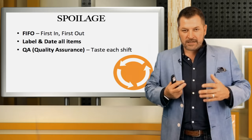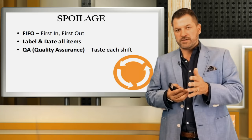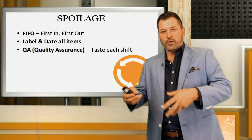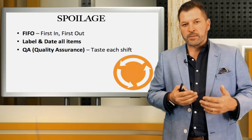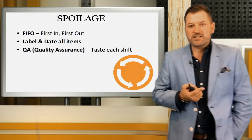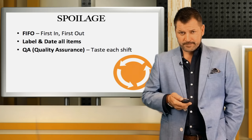Next: spoilage. Spoilage is simpler but worth reminding everyone that product should be rotated. The concept is called FIFO — first in, first out. Everything should be labeled and dated, and when new prep or new product goes into the cooler or storage area, it's put behind the oldest product so the oldest stuff is used first. That's critical not just from a flavor and consistency standpoint, but from a food safety standpoint and from a spoilage and waste platform.